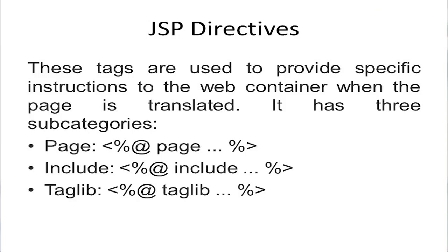Now let's look at JSP directives. Under JSP directives we have: page import, include, and taglib. These tags are used to provide specific instructions to the web container when the page is translated. They are encapsulated using the percentage at-rate (<%@) sign: <%@ page import ...%>, <%@ include ...%>, and <%@ taglib ...%>.